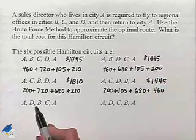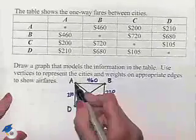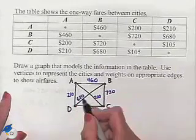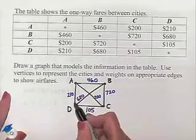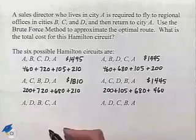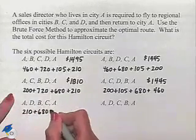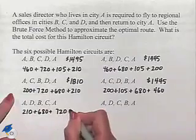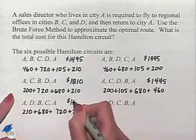Next, we have A, D, B, C, A. That's A to D to B to C to A. That's 210, 680, 720, and 200. So we add that together. And that total is $1,810.